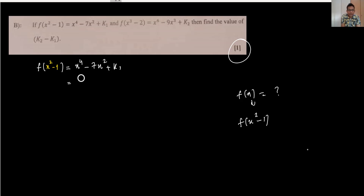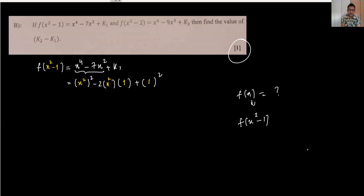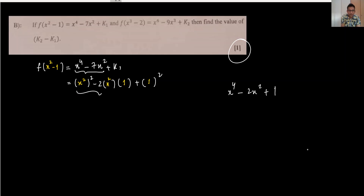To work with this, I want to express things in terms of (x² - 1). Using the formula (a - b)² = a² - 2ab + b², substituting a = x² and b = 1, gives x⁴ - 2x² + 1. This can be written in complete square form as (x² - 1)².